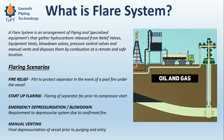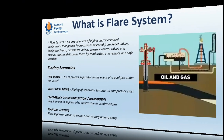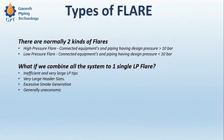Manual venting is used for final depressurization of vessels prior to purging and entry. This is done during shutdown when the venting system of the plant is not automated and has to be done manually. This covers the flare system scenarios, and now we will move forward to see types of flare.